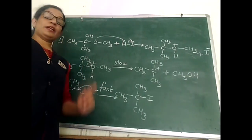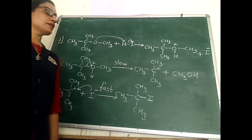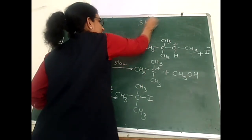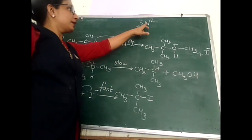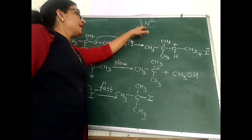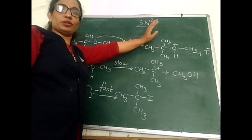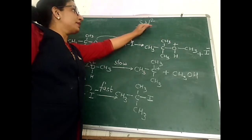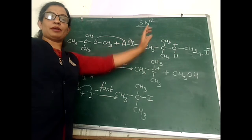When ether reacts with hydrogen halide, the mechanism followed is SN2 — nucleophilic substitution bimolecular reaction. The attacking species is a nucleophile, substitution takes place, and the rate of reaction depends on the concentration of both reactants — ether and hydrogen halide. However, this is the mechanism when the alkyl group in ether is either primary or secondary.